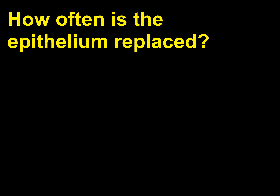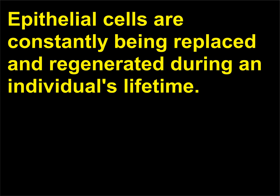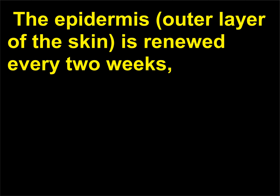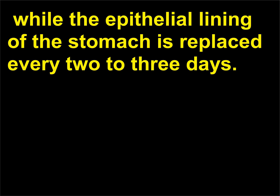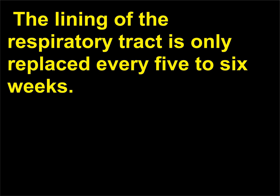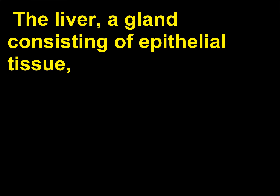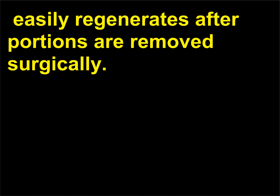How often is the epithelium replaced? Epithelial cells are constantly being replaced and regenerated during an individual's lifetime. The epidermis, outer layer of the skin, is renewed every two weeks. While the epithelial lining of the stomach is replaced every two to three days. The lining of the respiratory tract is only replaced every five to six weeks. The liver, a gland consisting of epithelial tissue, easily regenerates after portions are removed surgically.